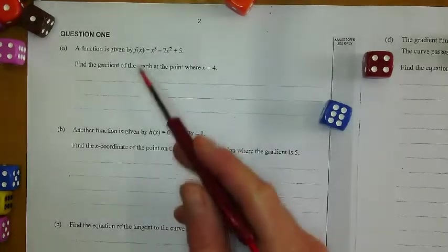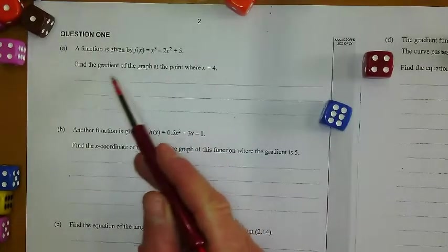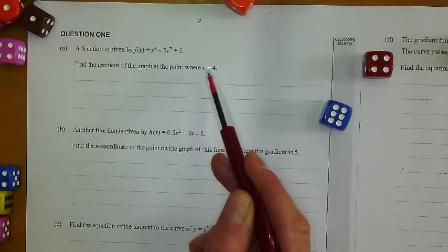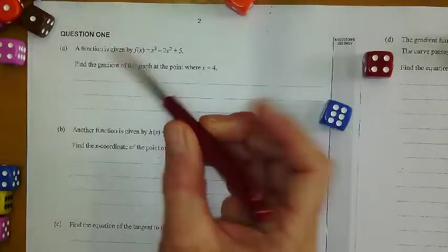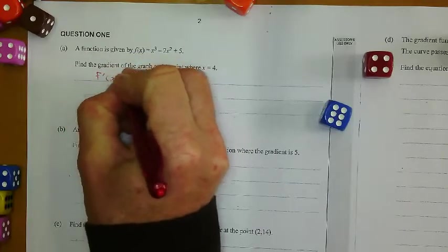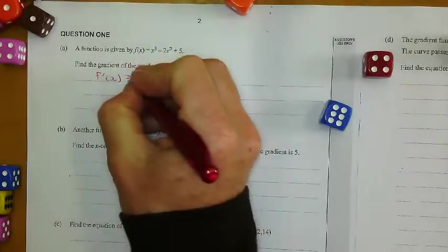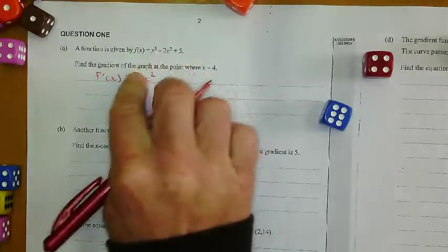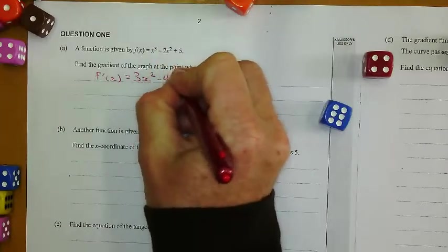So we open the booklet and this is the first question that we get here, which is straight finding the gradient of a graph where we're given an x-coordinate. So of course the first thing I'm going to do is derive this equation. And pretty straightforward first question, I get 3x squared minus 4x.